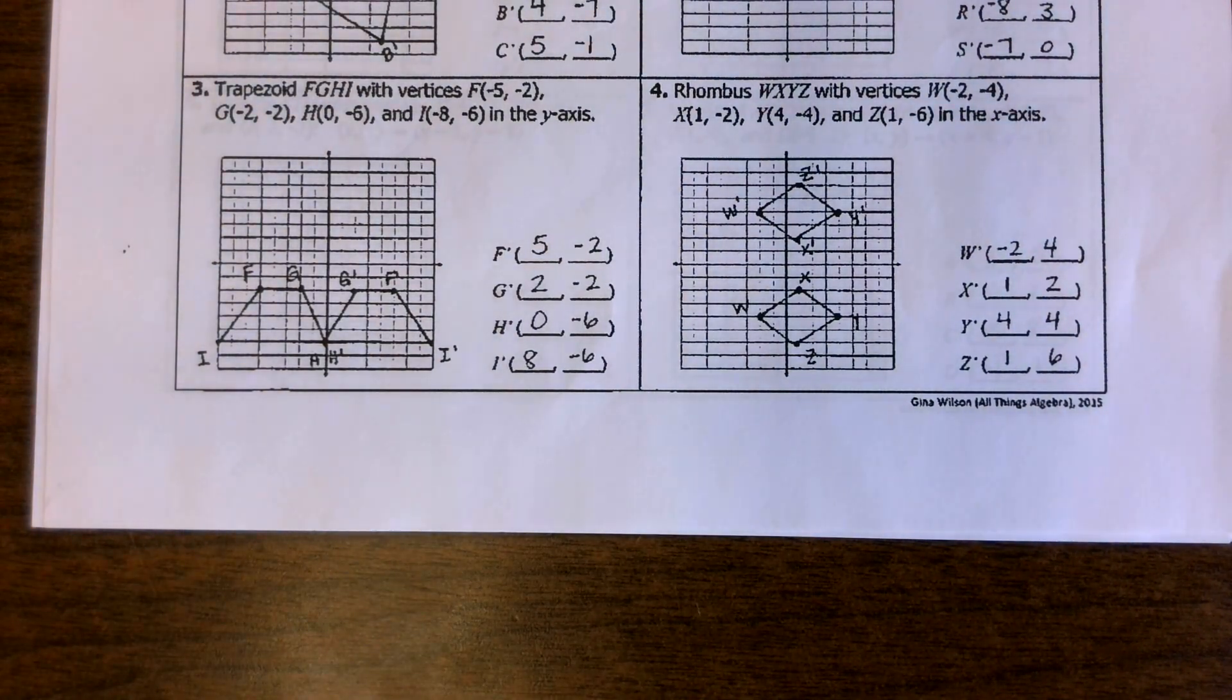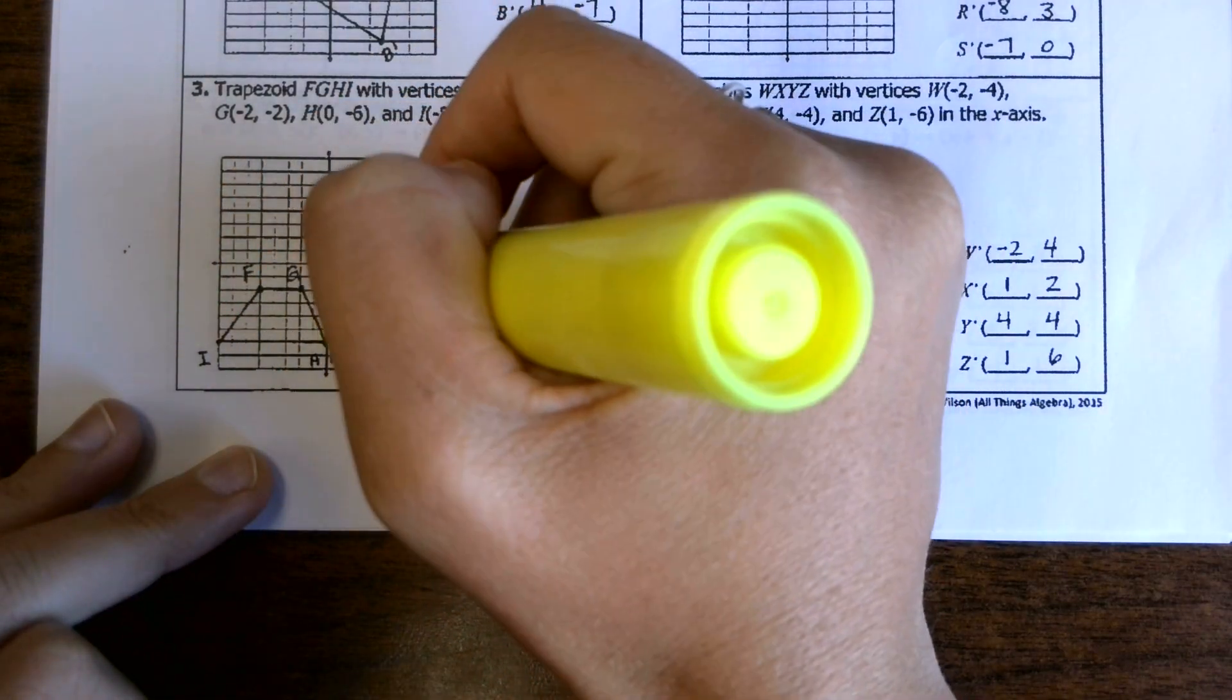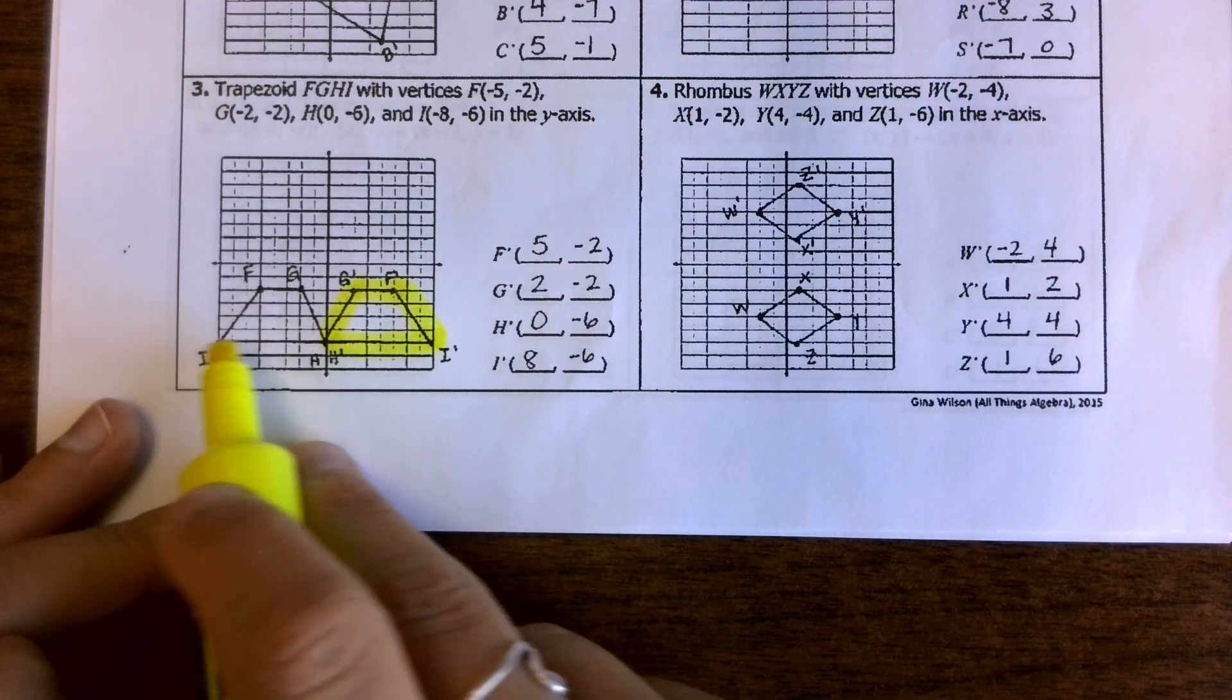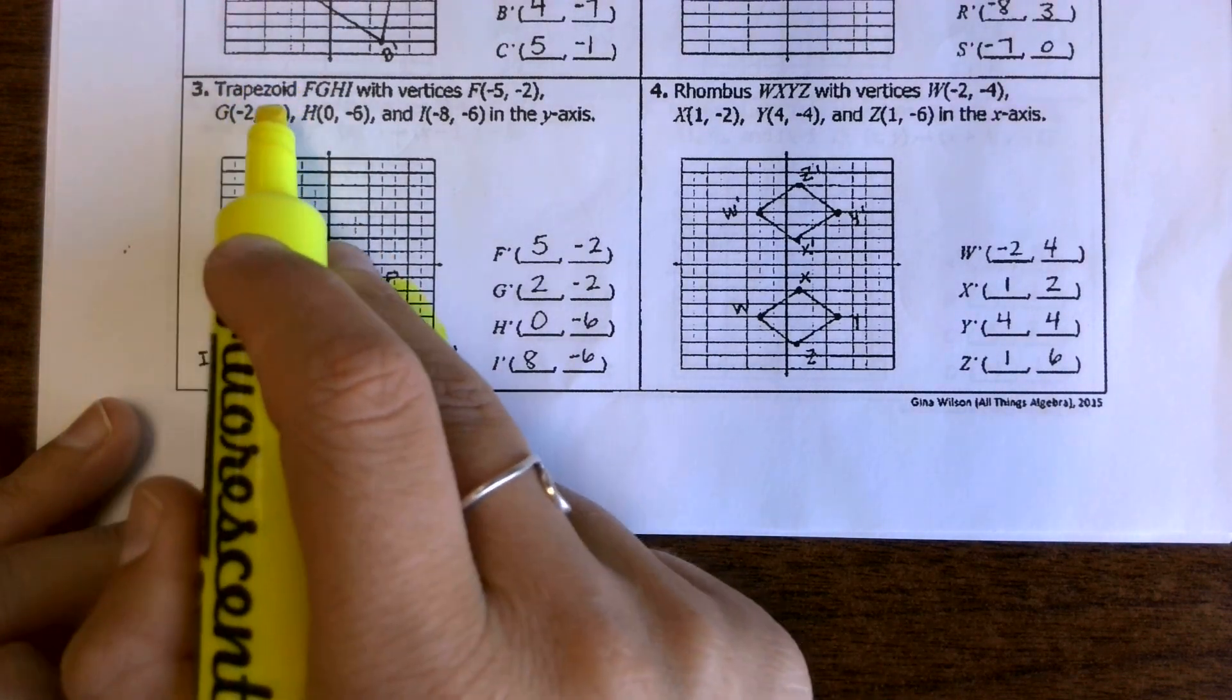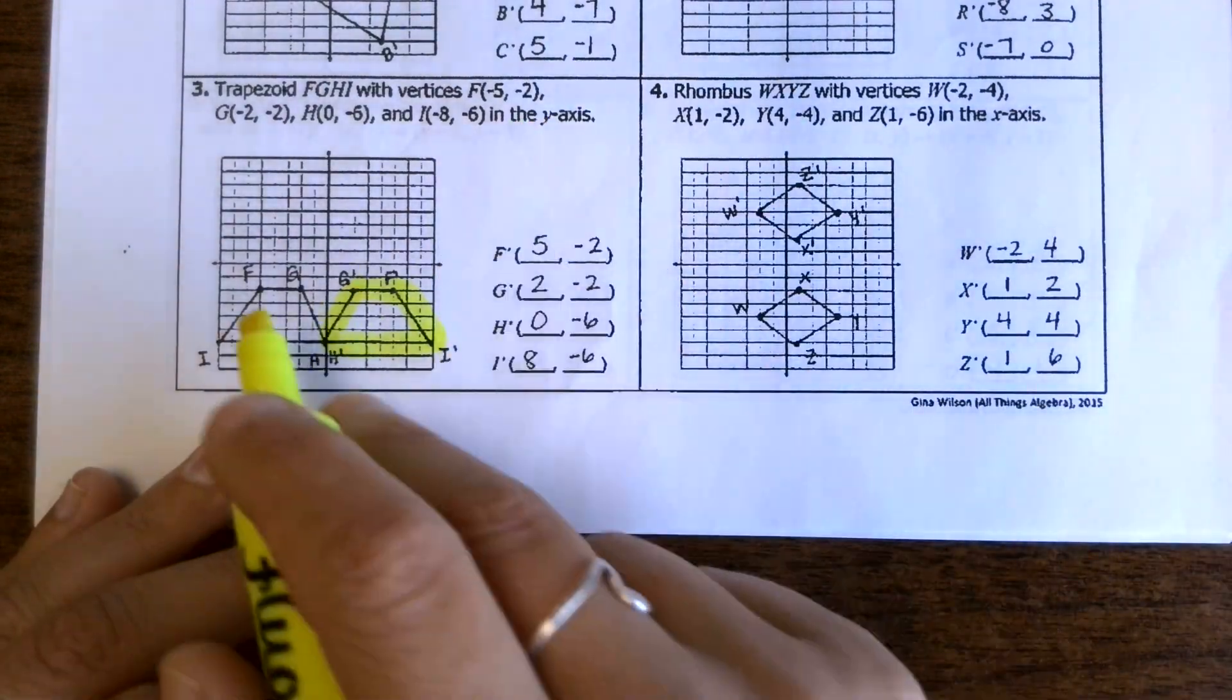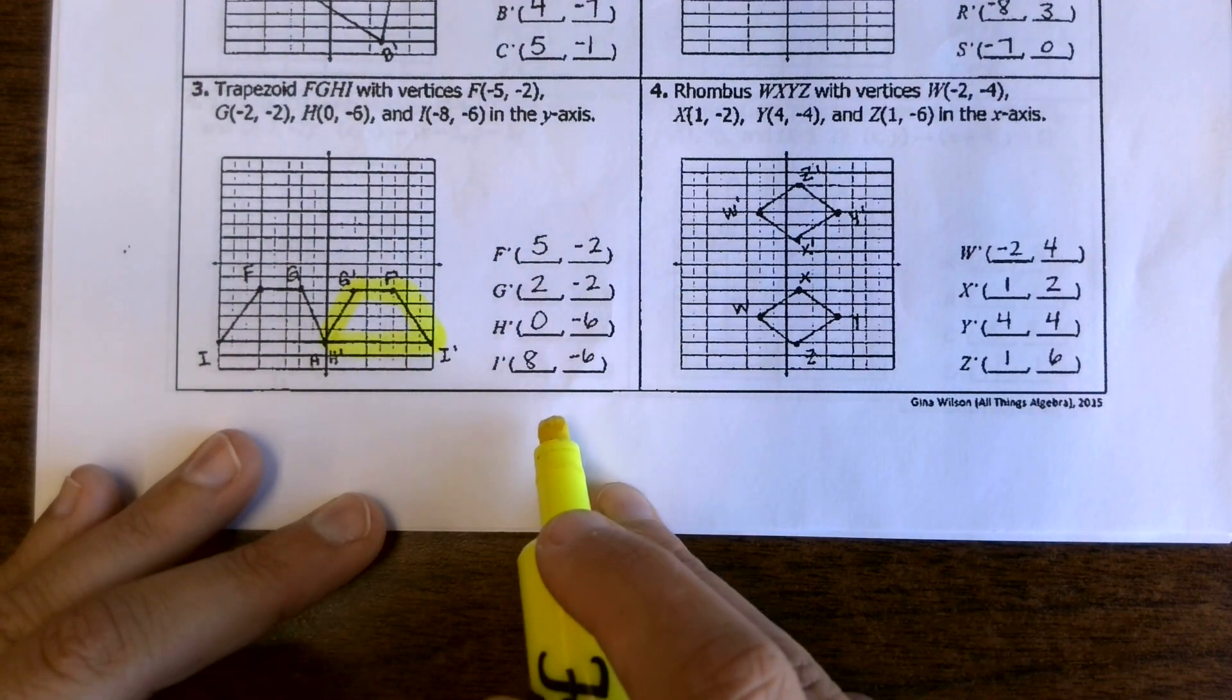So here's what you should have for 3 and 4. My pre-image over here on the left and then my image on the right. Again, telling us it's a trapezoid, so if you graphed and it didn't look like a trapezoid, back up. Be careful with plotting your points. And then this was reflected about the y-axis, so it should end up on the right. Check all of your ordered pairs here.